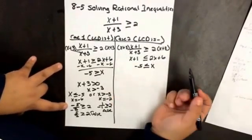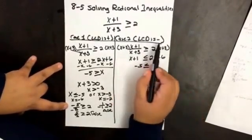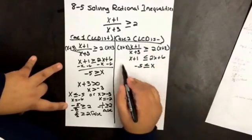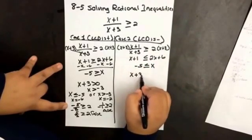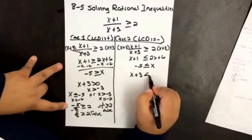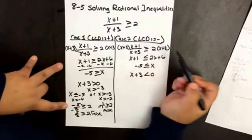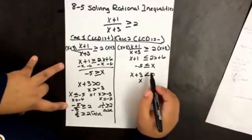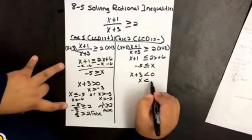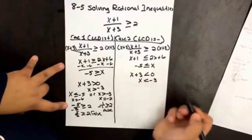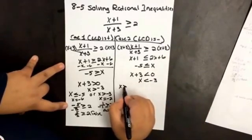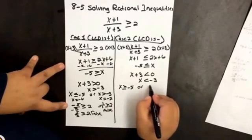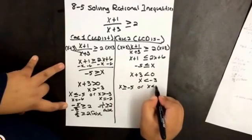Now we have to take into consideration the sign of the least common denominator. So x plus 3 is less than 0 since we said that it was negative. If we solve for x, then x is less than negative 3. So we have x greater than or equal to negative 5 or x less than negative 3.